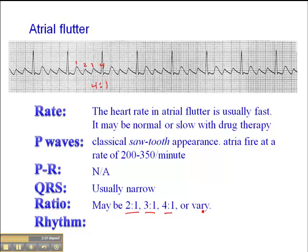The ratio may also be 3 to 1 or 4 to 1, or it may vary. Typically when the ratio varies, it's because the patient is on some kind of drug that affects AV conduction — such as a calcium channel blocker or beta blocker that alters AV nodal conduction. That would be important to note, and if there is a variable ratio, make sure you document it and report it to the receiving hospital staff. The rhythm in atrial flutter is typically regular when there's a constant ratio.